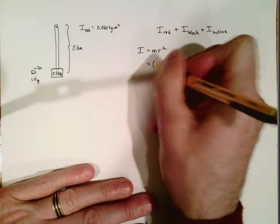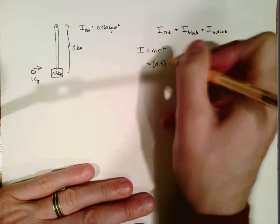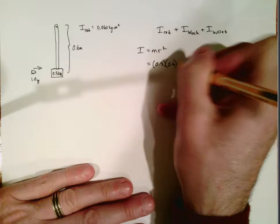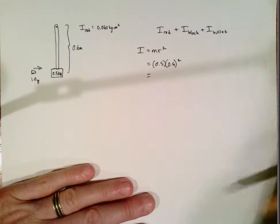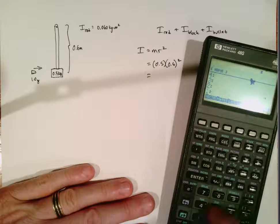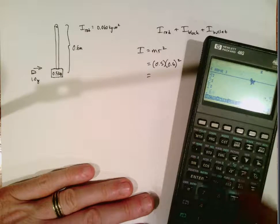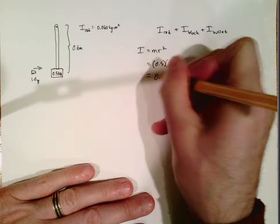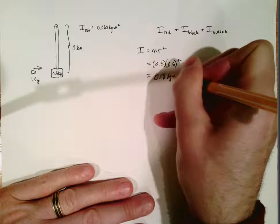So let's just calculate that. So we have a 0.5 kilogram object, the block, at a distance of 0.6 from the axis of rotation. So 0.5 times 0.6 squared is 0.18. Again the units there are kilogram meters squared.